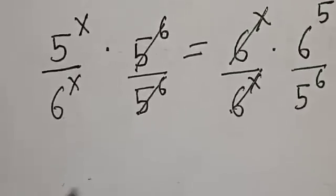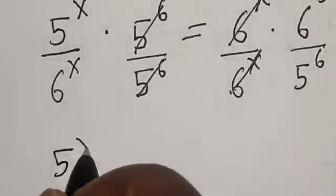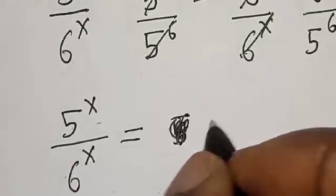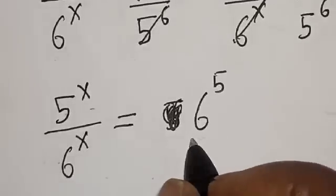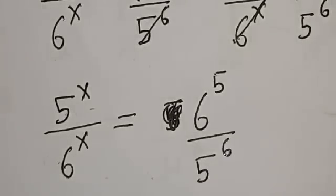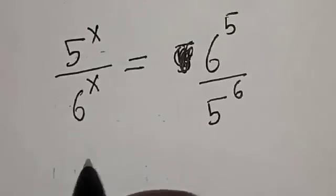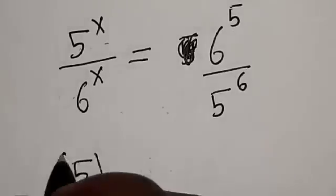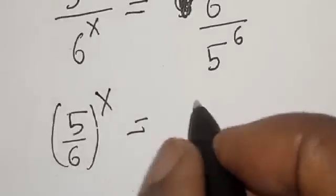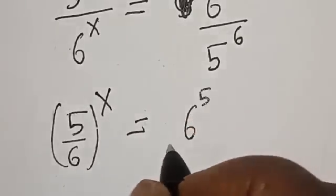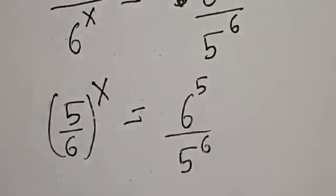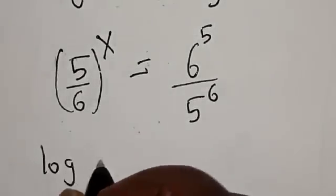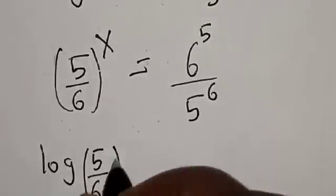5 raised to power s divided by 6 raised to power s is equal to 6 raised to power 5 divided by 5 raised to power 6. This is the same thing as 5 divided by 6, all raised to power s, is equal to 6 raised to power 5 divided by 5 raised to power 6.